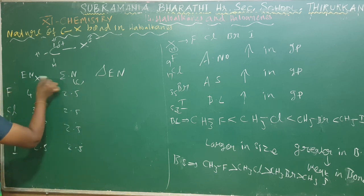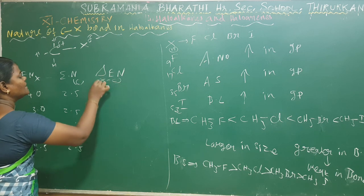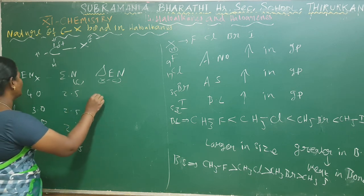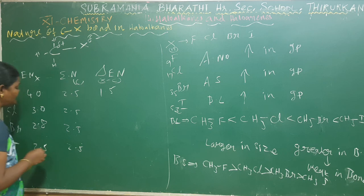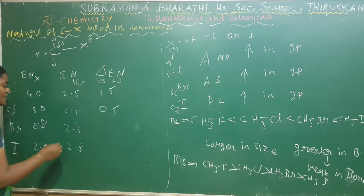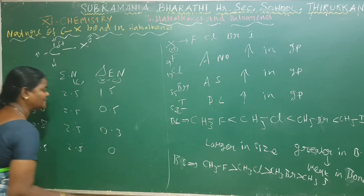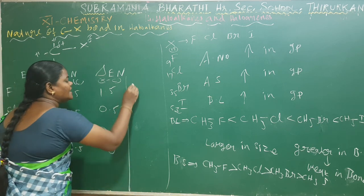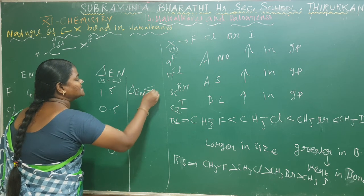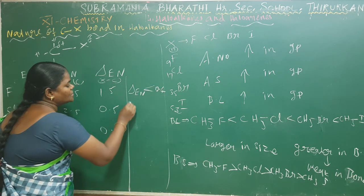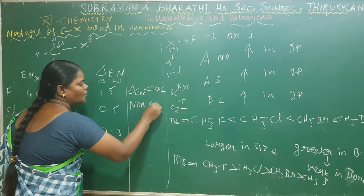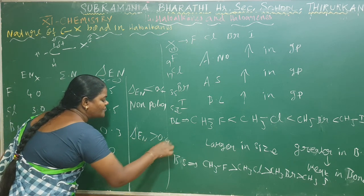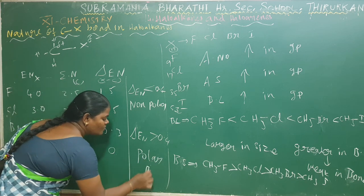Now the electronegativity differences (halogen minus carbon) are: fluorine: 4.0 − 2.5 = 1.5; chlorine: 3.0 − 2.5 = 0.5; bromine: 2.8 − 2.5 = 0.3; iodine: 2.5 − 2.5 = 0.0. If the electronegativity difference is greater than 0.4, the bond is polar. If it is less than 0.4, the bond is non-polar.